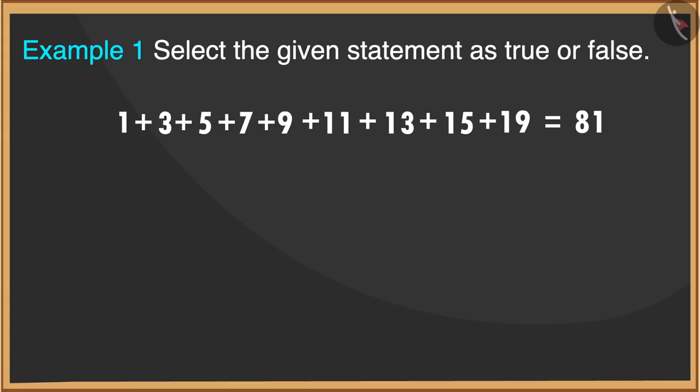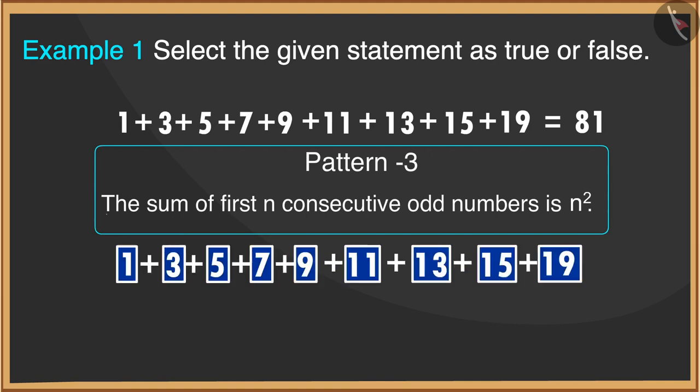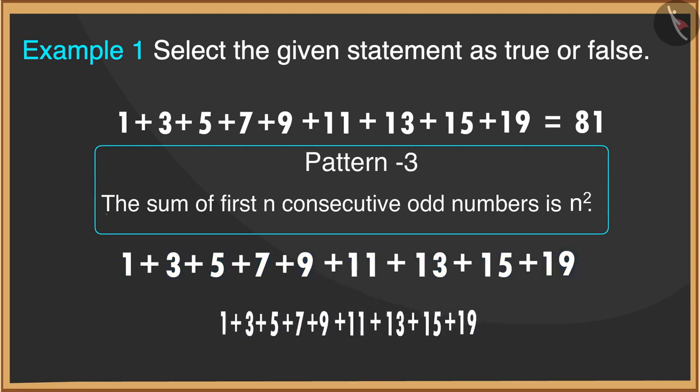If you believe the statement to be true, then you must have used Pattern 3. For this, you must have counted odd numbers which are a total of 9, then you must have written the square of number 9 which gave you the number 81.